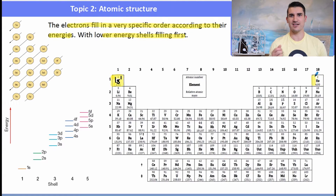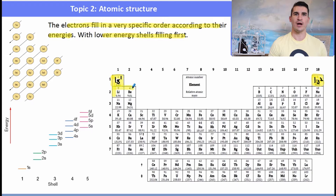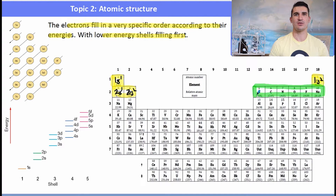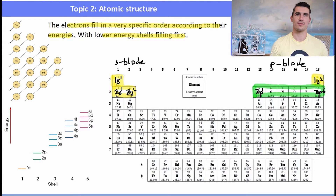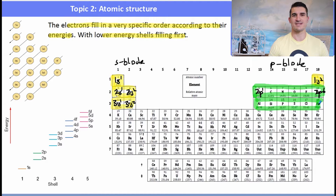Moving to the next period, the next lowest energy is the 2s: lithium is 2s¹ and beryllium is 2s². Then the 2p subshell fills from boron (2p¹) to neon (2p⁶). Group 1 and 2 used to be called the s block, and groups 13 to 18 the p block. Moving down: 3s¹ and 3s², then the 3p block from aluminium (3p¹) to argon (3p⁶).